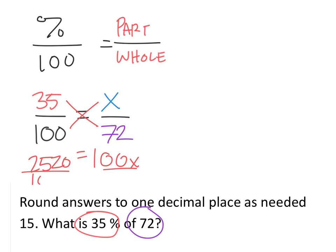We'll just divide each side by 100. And that gives me 25.2 is my x value, which I didn't need to write there, because we just use x arbitrarily.